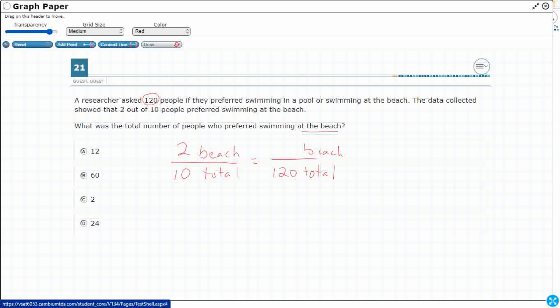When we get to this point, there are a few things we can do. They're equivalent fractions. So I'm thinking 2 times something equals 120. Or 10 times something equals 120. That's 12.